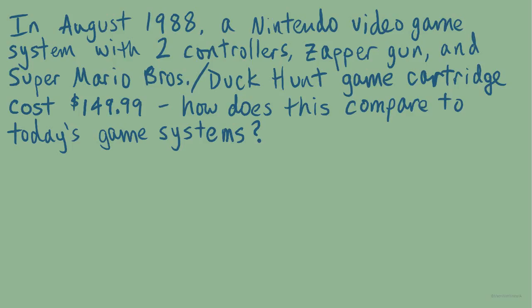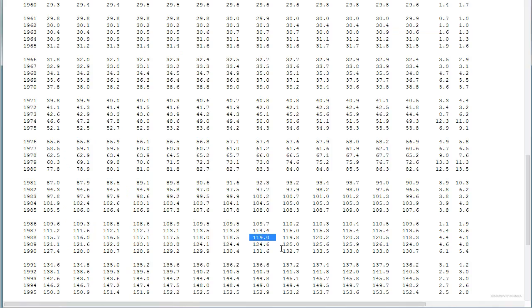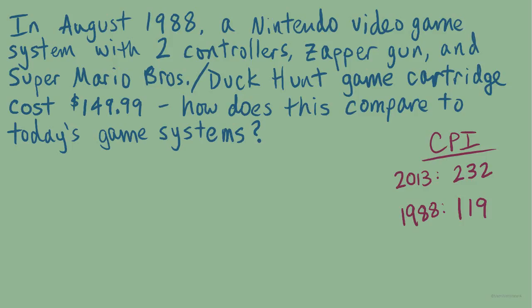For our next example, in August 1988 a Nintendo video game system with two controllers, Zapper Gun, and the Super Mario Bros./Duck Hunt game cartridge cost $149.99 retail. How does this compare to today's game systems? We'll still use 232 as the CPI for 2013, but we need to know the CPI for August 1988. Going to the Bureau of Labor Statistics website, we can see that the CPI in August 1988 was 119. Now try to set up the proportion yourself, then restart the video to check your answer.